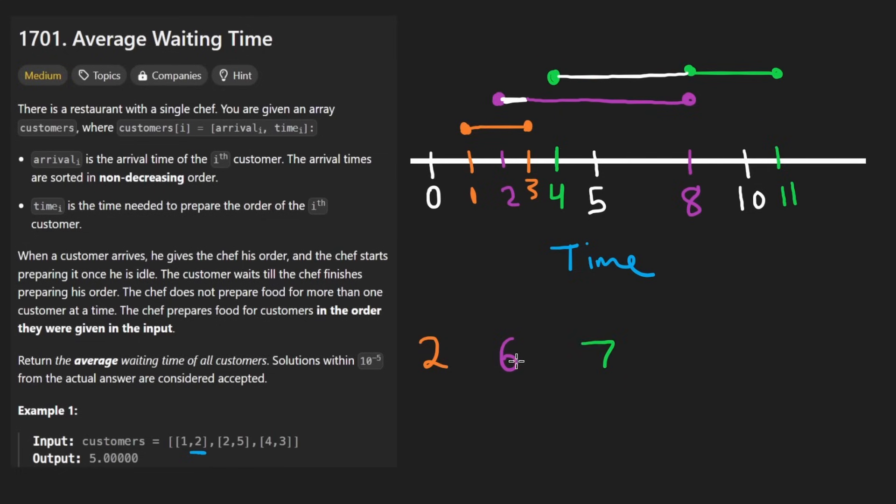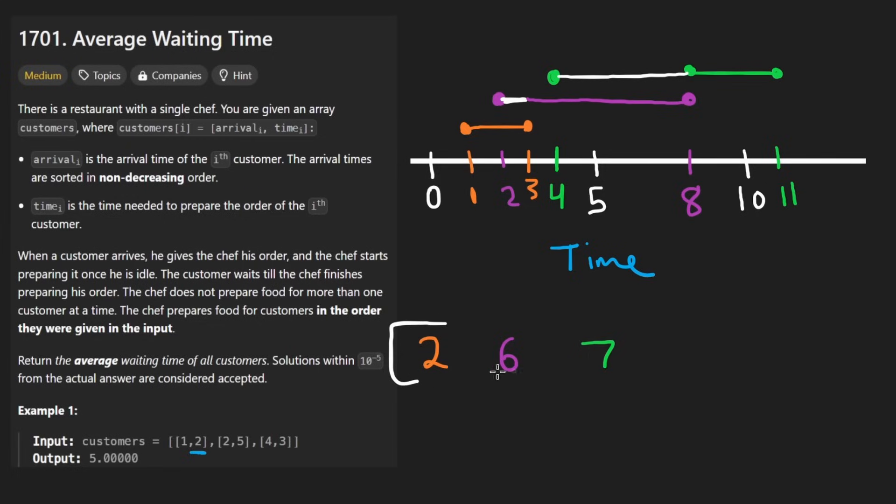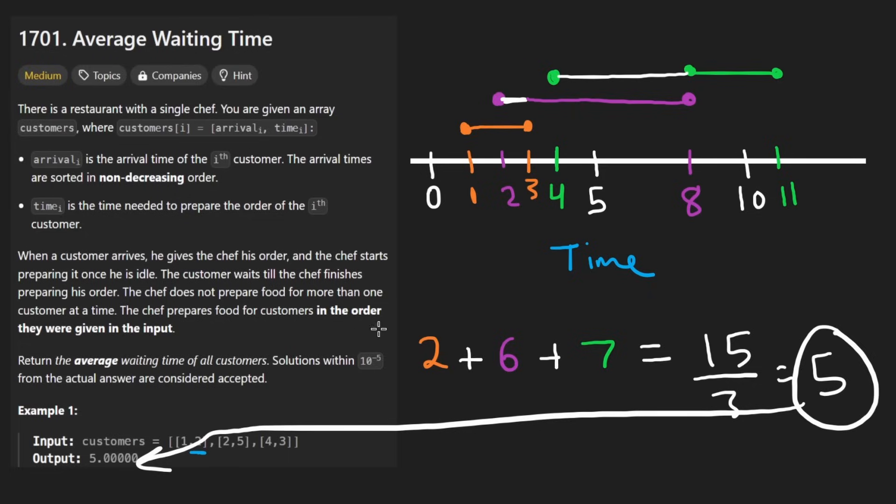So now what do we do? Well, I want to mention that what were we doing with these values? Theoretically, you could have added them to an array. Then at the end, you could sum that array and then divide it by the length of that array, which in this case was three. But why use extra space if we don't have to? Because if all we care about is the sum anyway, let's just keep track of the sum. So that's what we're going to do. We're going to be summing these values as we go. We'll get, I think in this 15, we'll divide that by three. We get a nice whole number five and that's what we're going to go ahead and return.